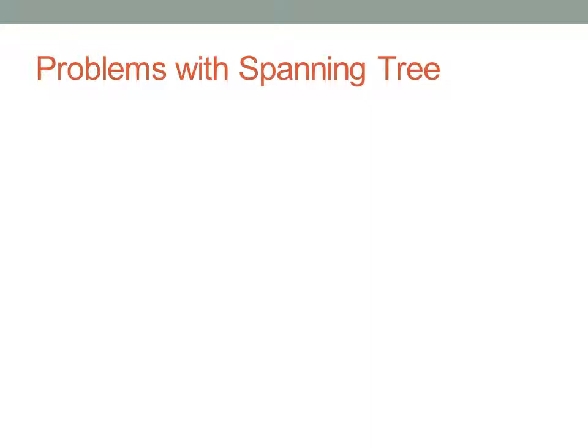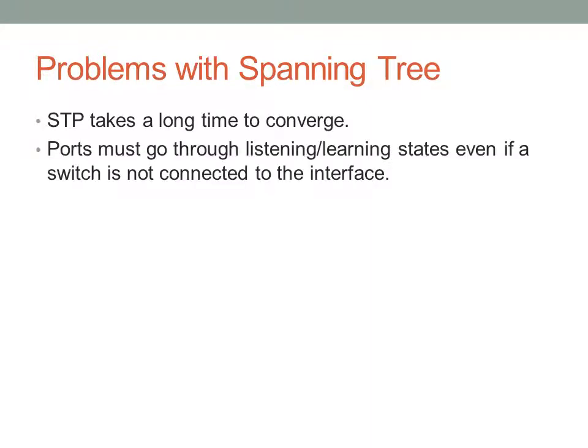Some of the problems we've encountered with SpanningTree: it takes a long time to converge. Ports have to go through listening and learning states, even if there aren't any switches connected to that interface — just in case a new switch is connected and a BPDU is received, or a redundant link has failed somewhere else in the network and something has become unblocked. SpanningTree takes a very conservative approach to preventing loops.